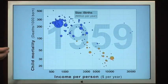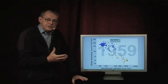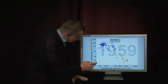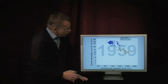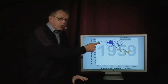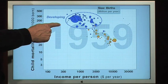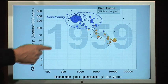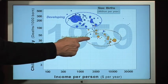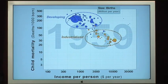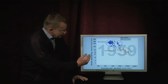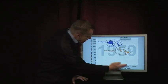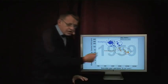Each bubble is a country, and the size represents the number of births. The blue ones are the developing countries, the brown ones are the industrialized countries. You can see that industrialized countries had higher income and lower child mortality.